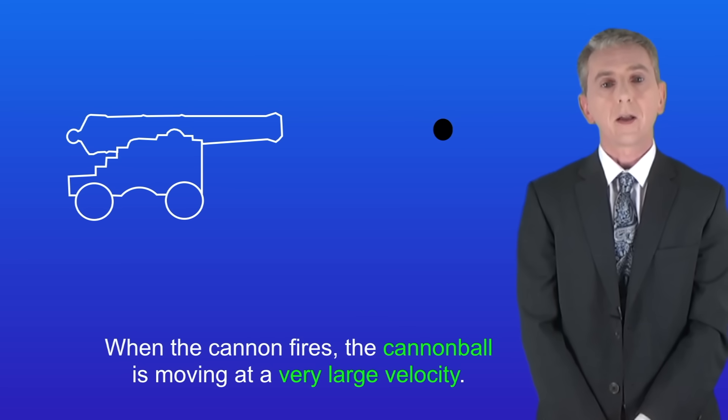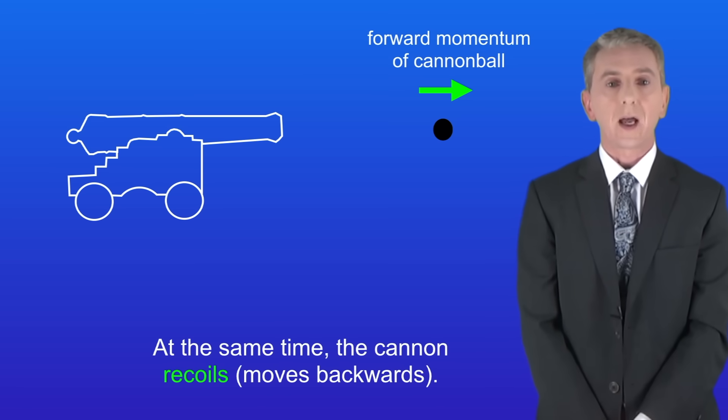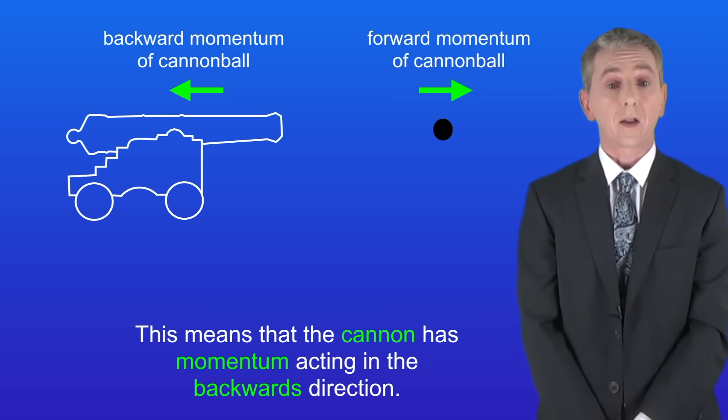When the cannon fires the cannonball is moving at a very large velocity. So the cannonball has momentum in the forward direction. At the same time the cannon recoils. In other words it moves backwards. This means that the cannon has momentum acting in the backwards direction.